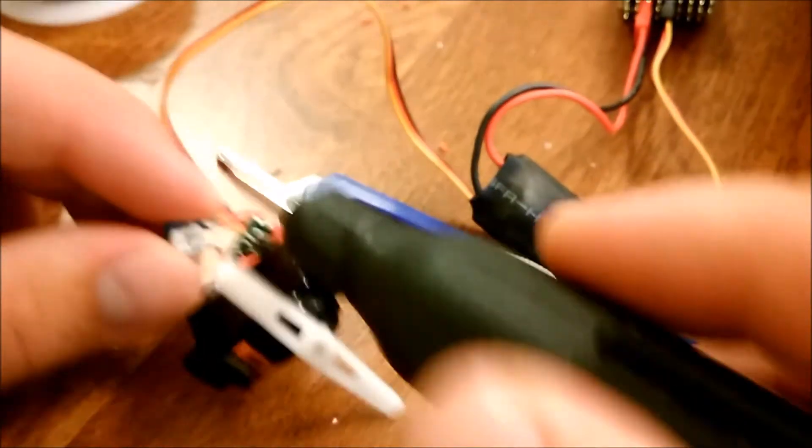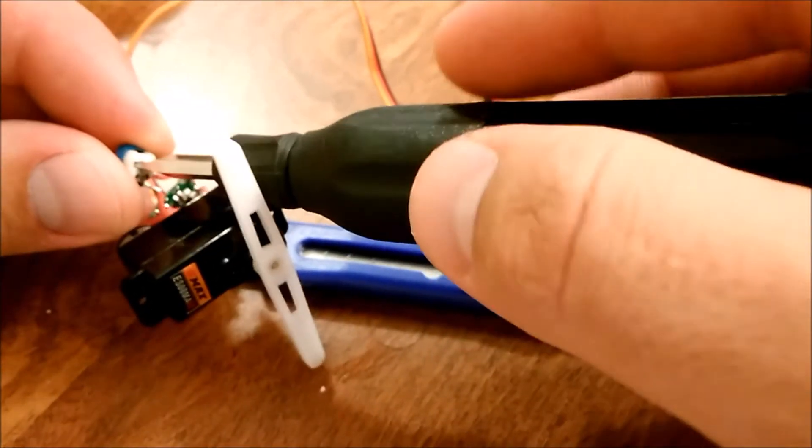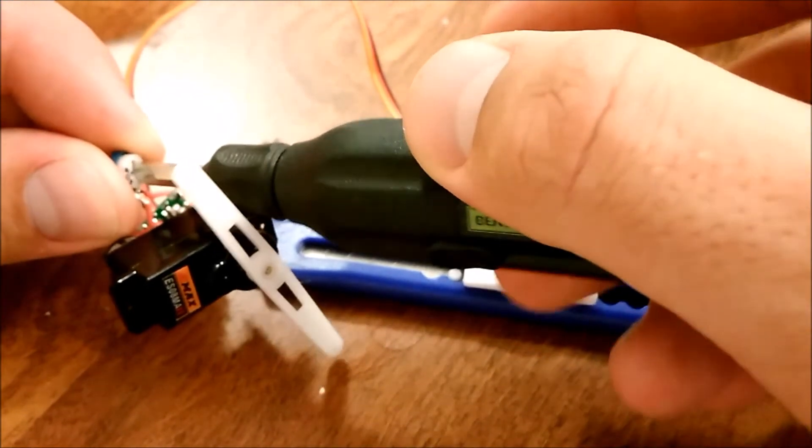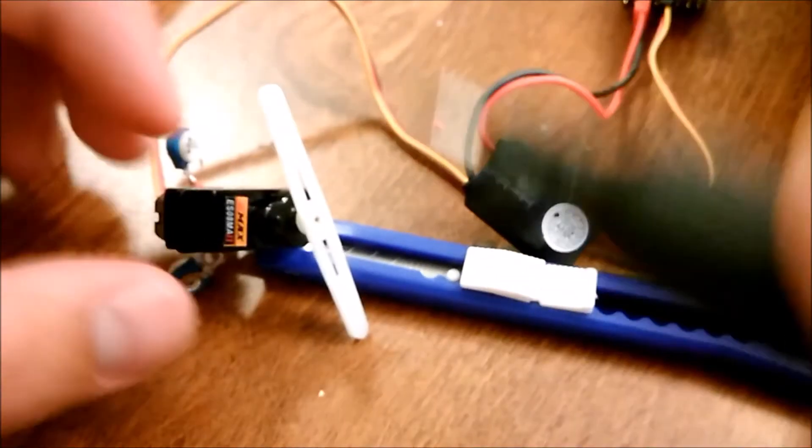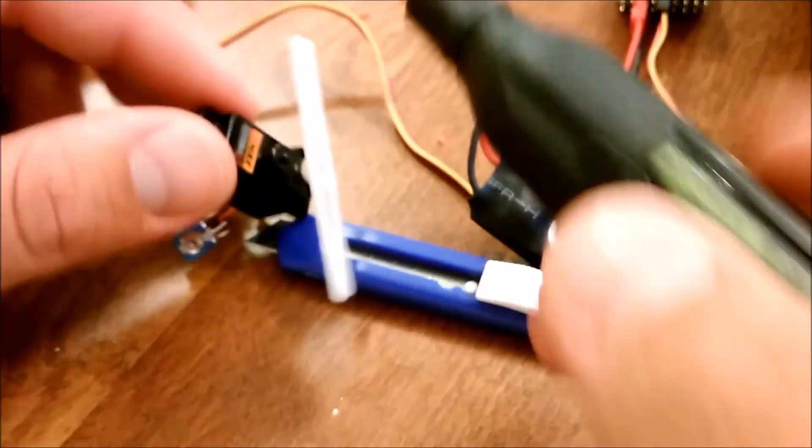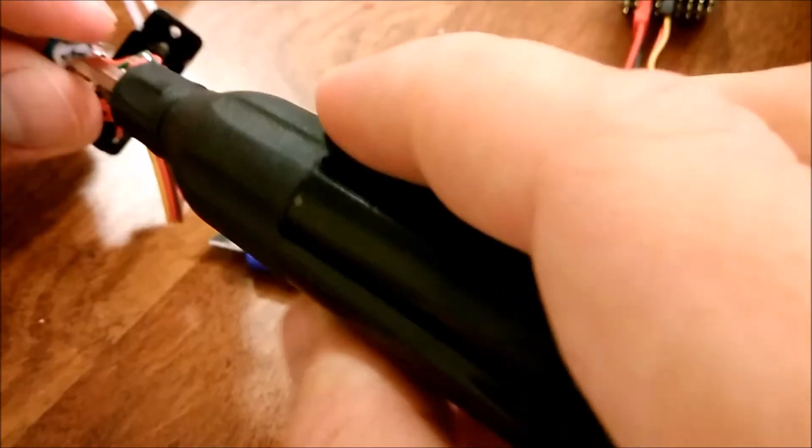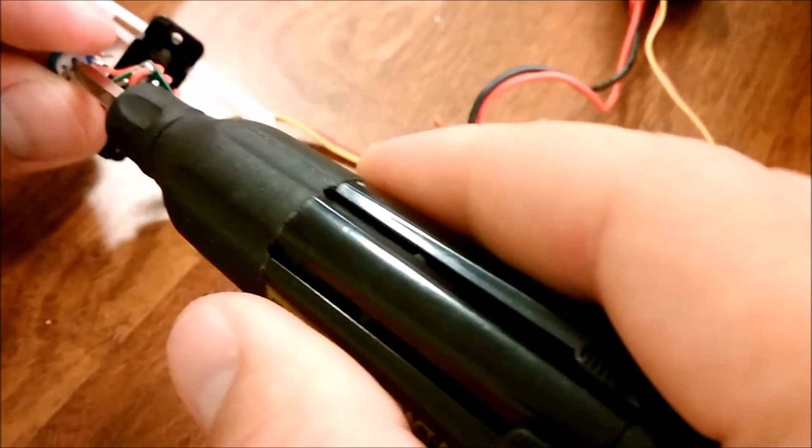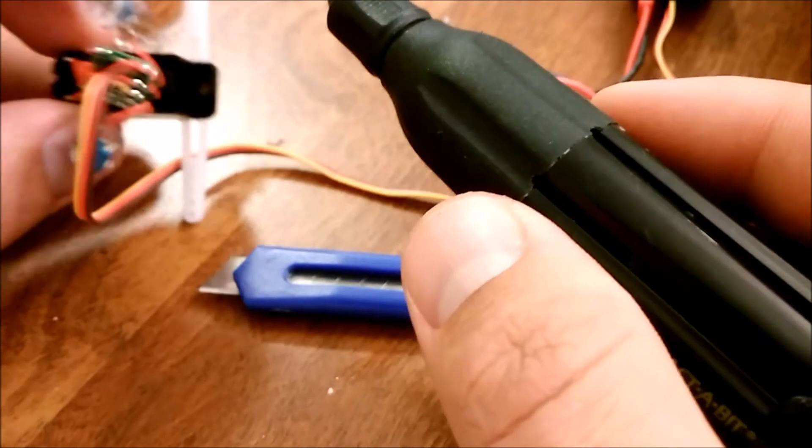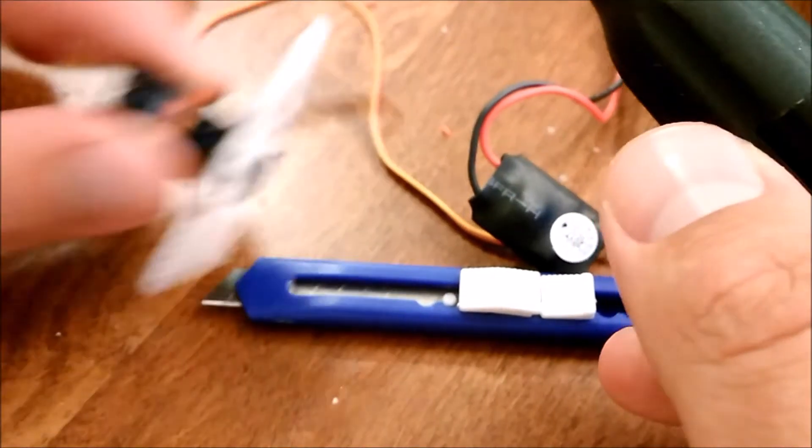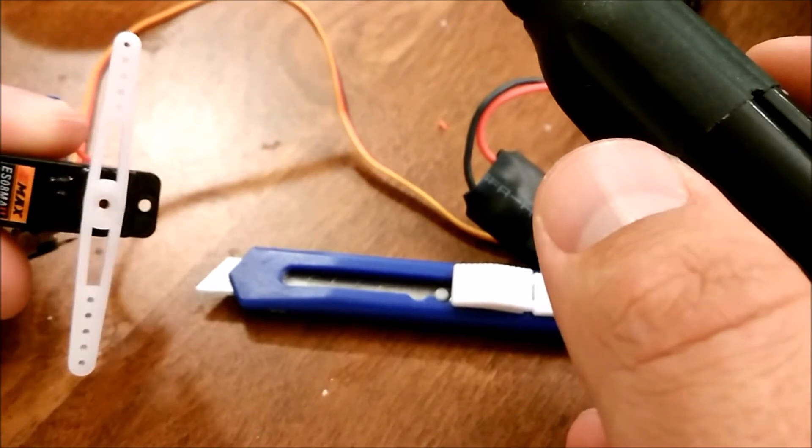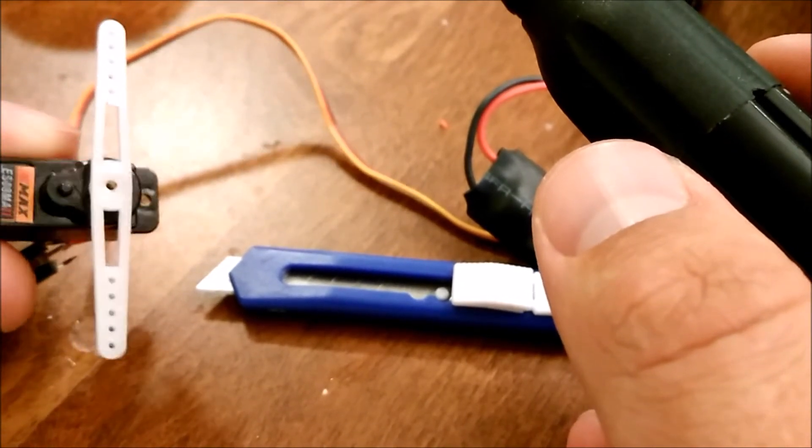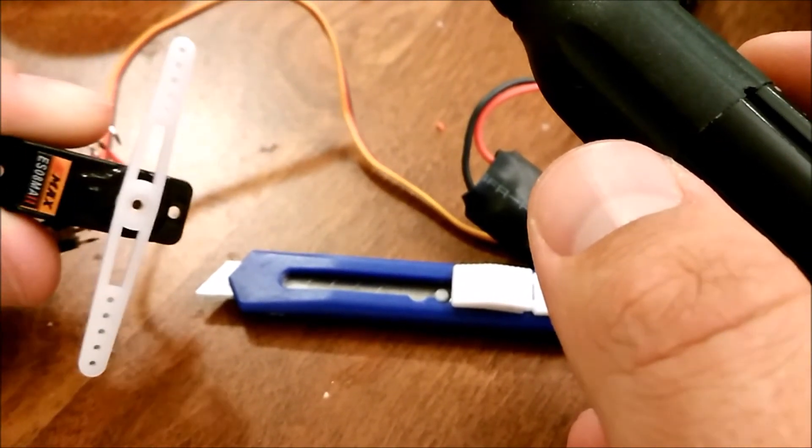Then when you adjust the one potentiometer, it kind of acts like a trim or an adjustment, but then you can just trim the other side, turn the other side of the pot until it goes back to level. So it kind of acts like a trim if you have some sort of application where you can't trim on your radio, you can use these as a trim.